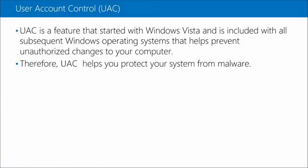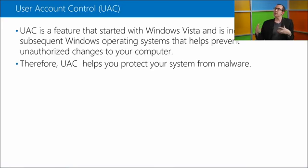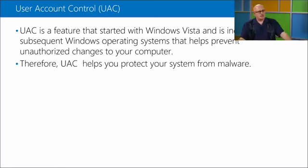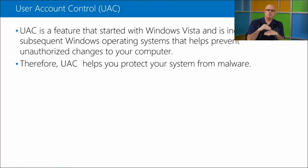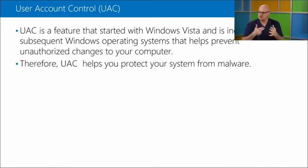User Account Control (UAC) started with Vista and gives you a level of protection from malware. As low-level changes are made to your computer, you are informed: 'This program is trying to make changes to the system — are you sure?' Windows Firewall can prevent hackers or malicious software from gaining access to your computer through the network, and can also stop your computer from sending malicious traffic. There are two components: incoming and outgoing — most people think about incoming, not so much outgoing.